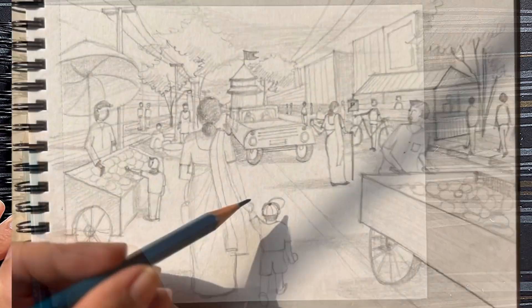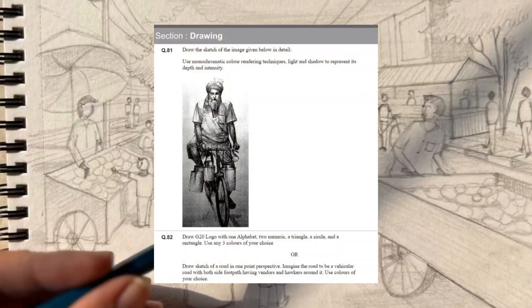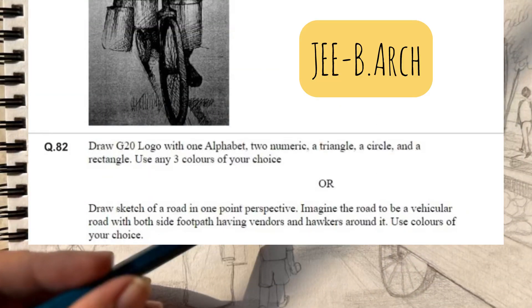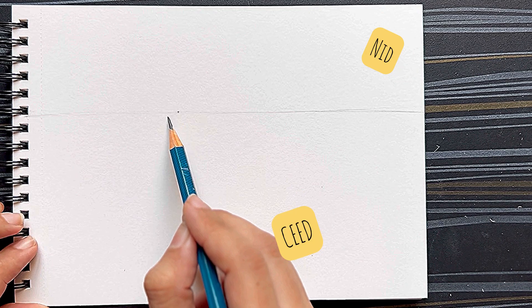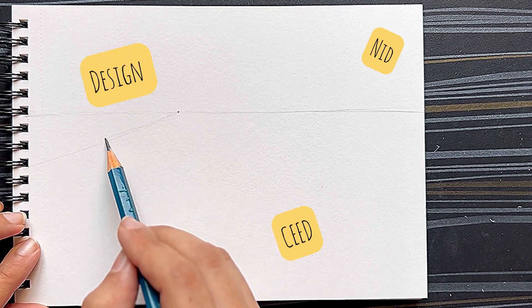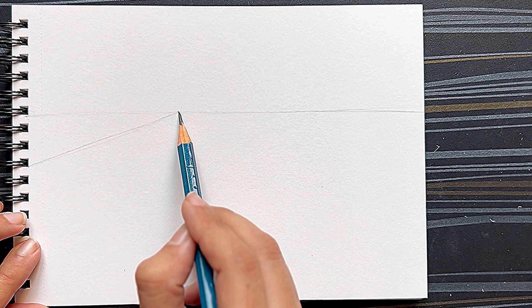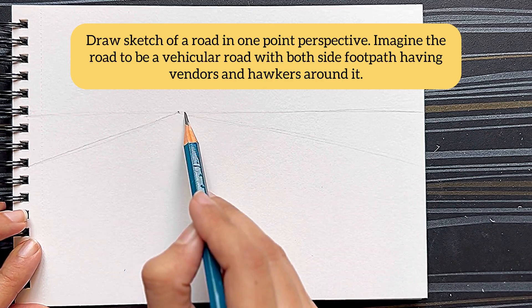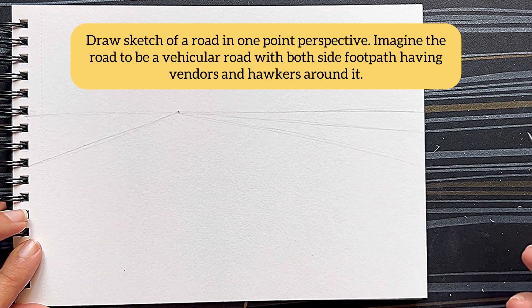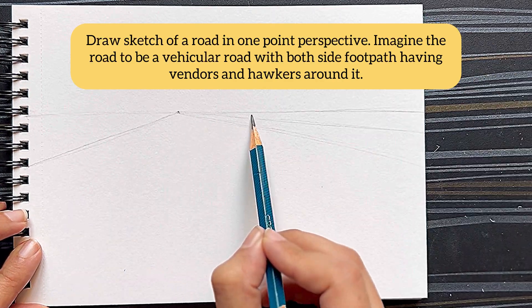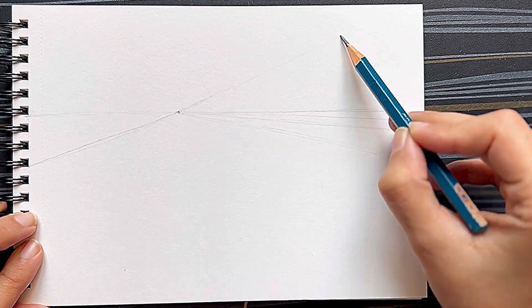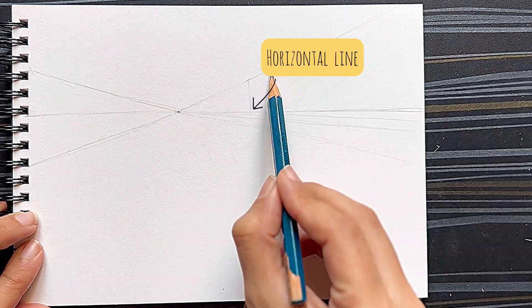This is a perspective drawing exam preparation covering one of the questions from previous year papers of JEE B.Arch, NID, SEED, and other design examinations. The question is: draw a sketch of a road in one-point perspective. Imagine the road to be vehicular with both-side footpaths having vendors and hawkers around it.